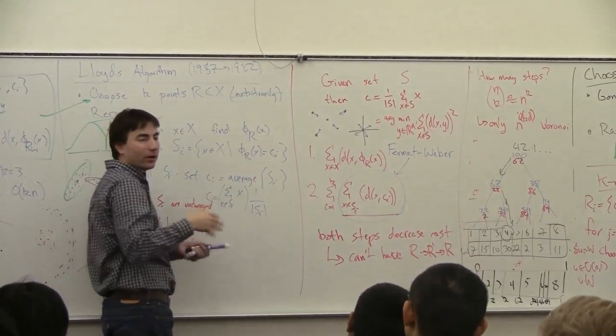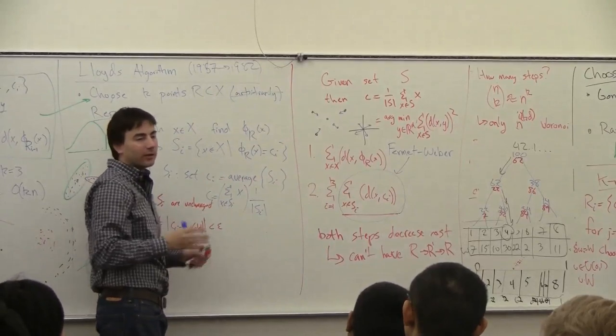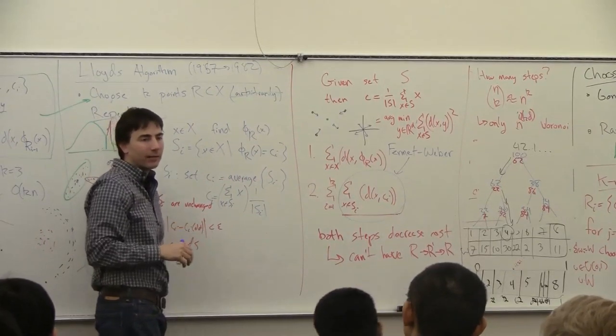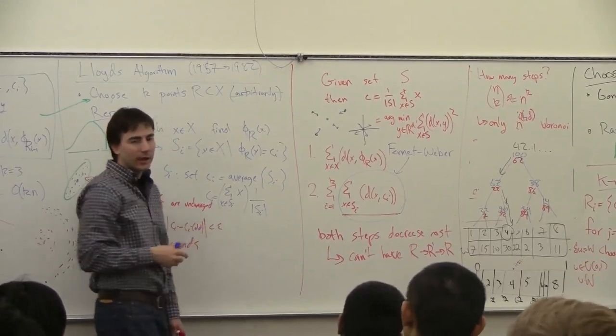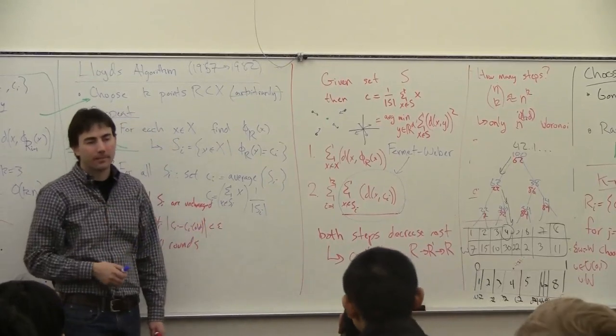There's no combinatorial bound on the steps this will take, so it's much less known how to solve k-median exactly. Student: Could you iterate your in-stepping and get caught in a local minimum there?